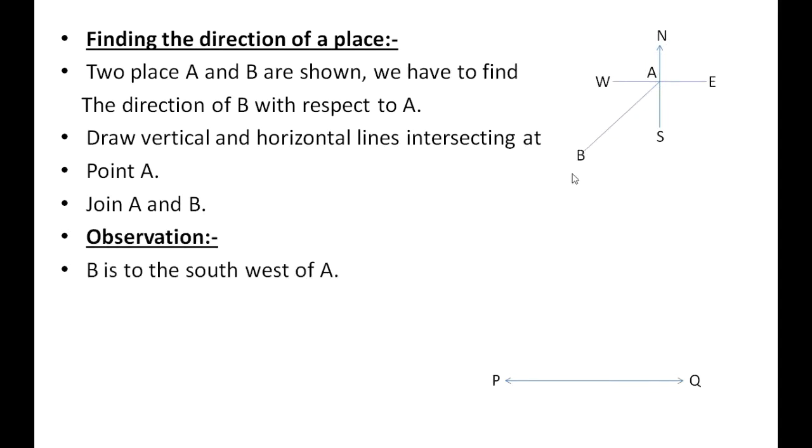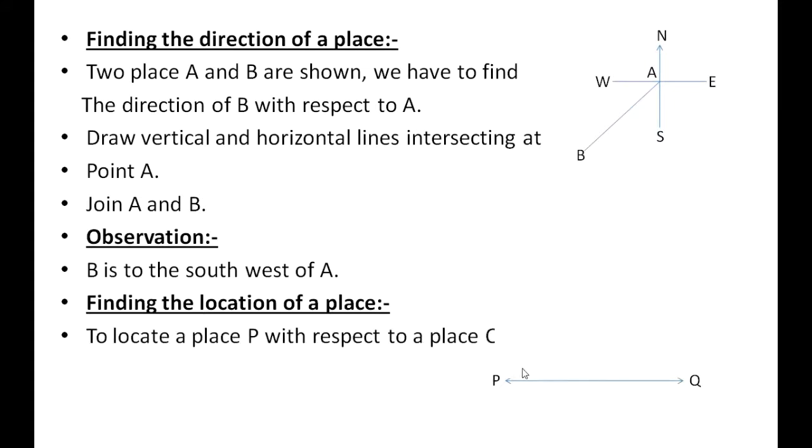Finding the location of a place: To locate a place P with respect to a place Q, we need to know two things - the direction of P with respect to Q, and the distance of P from Q.